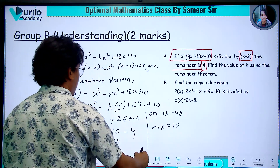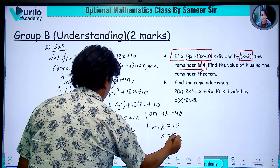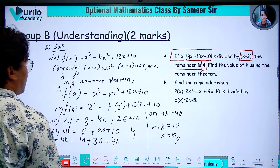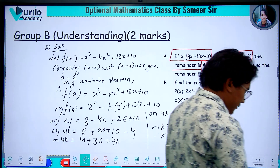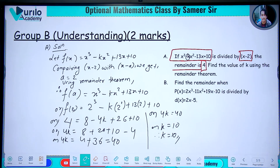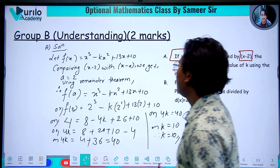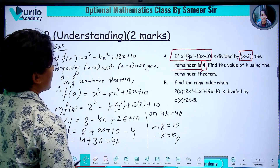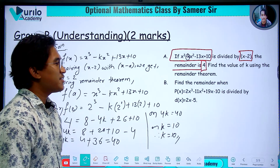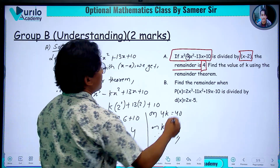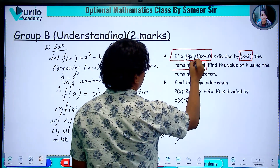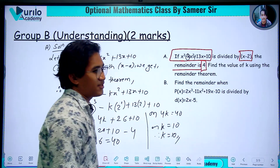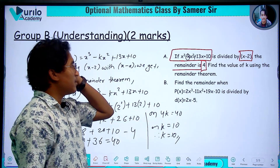Therefore k is equal to 10. We can also note that the original polynomial has plus 13x. So the answer for k is 10.